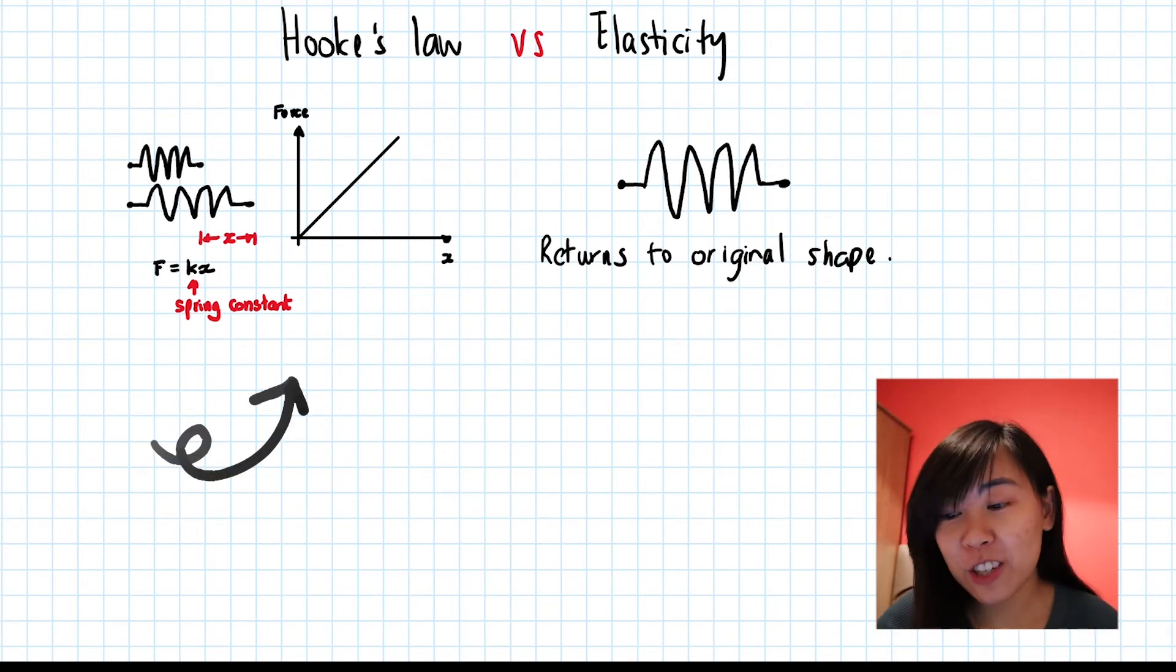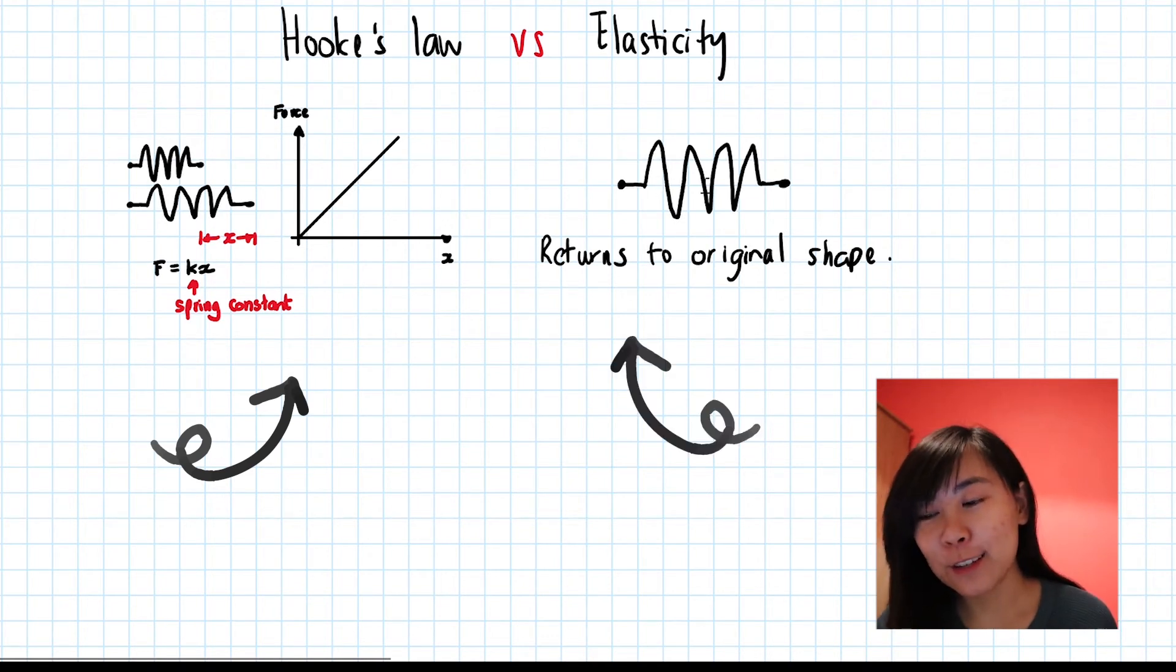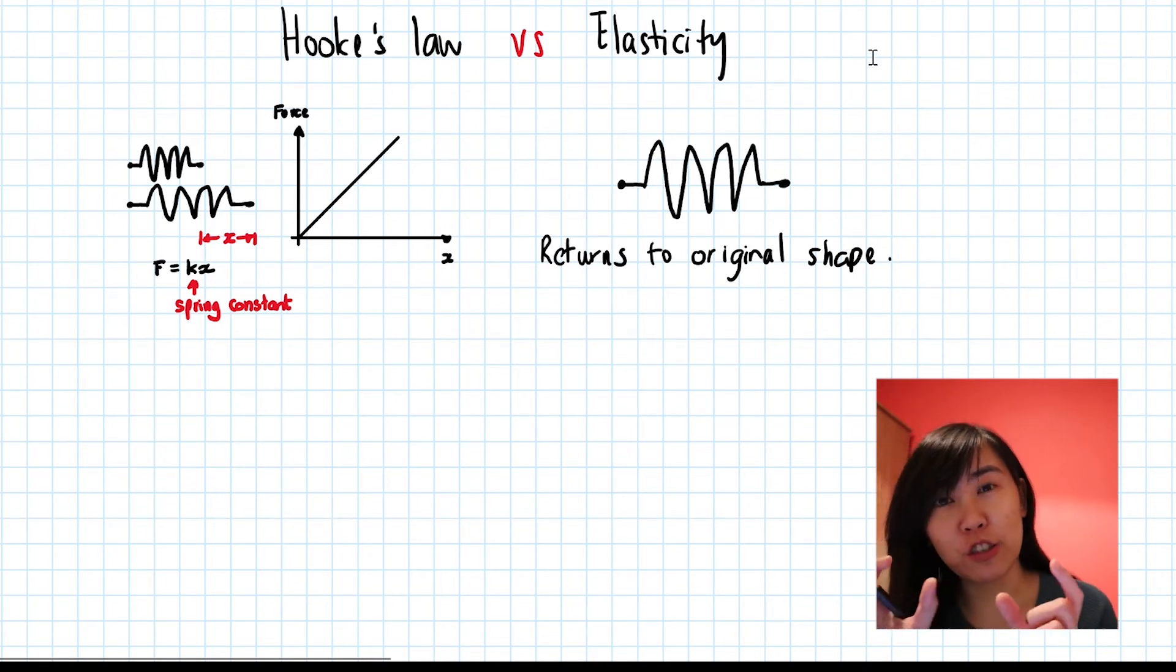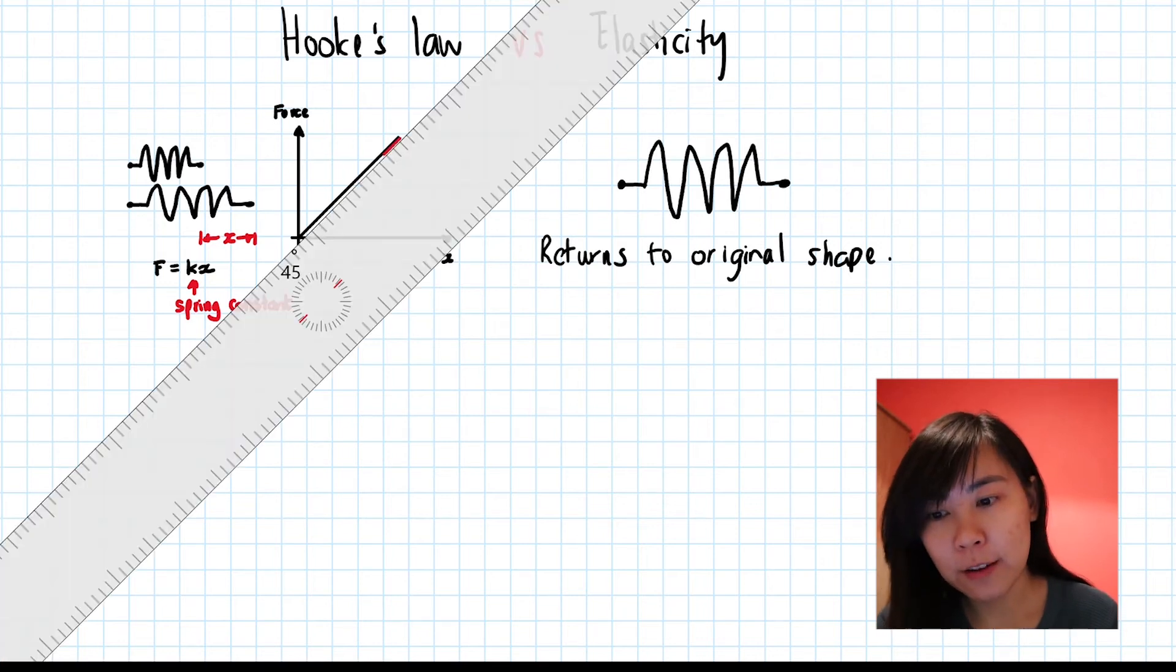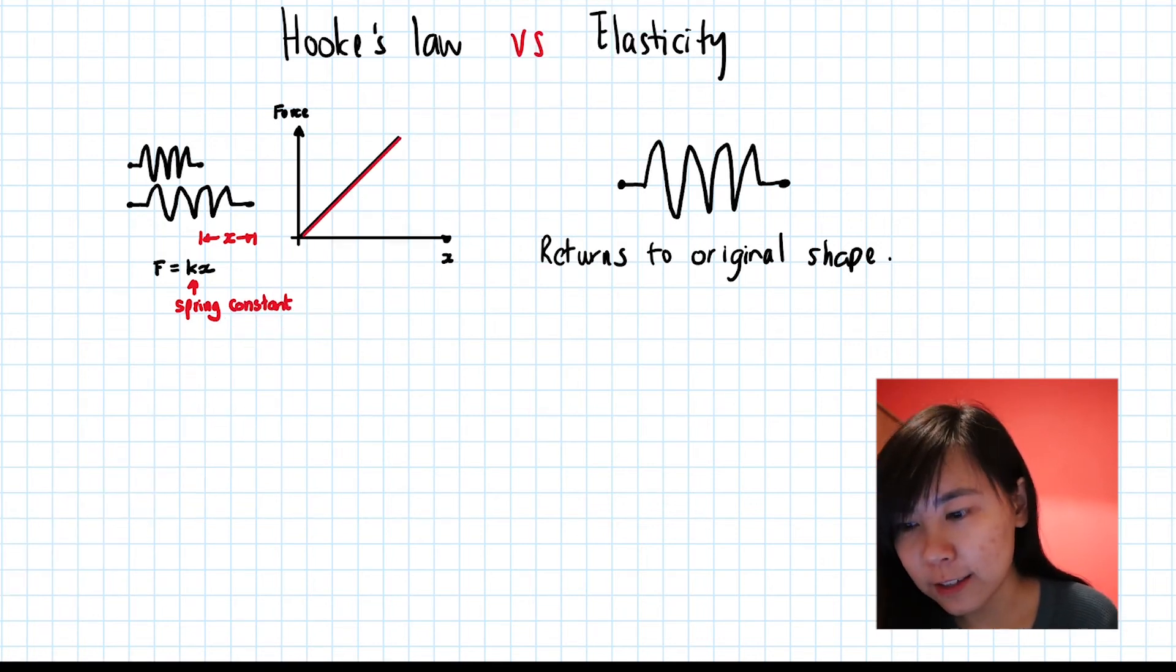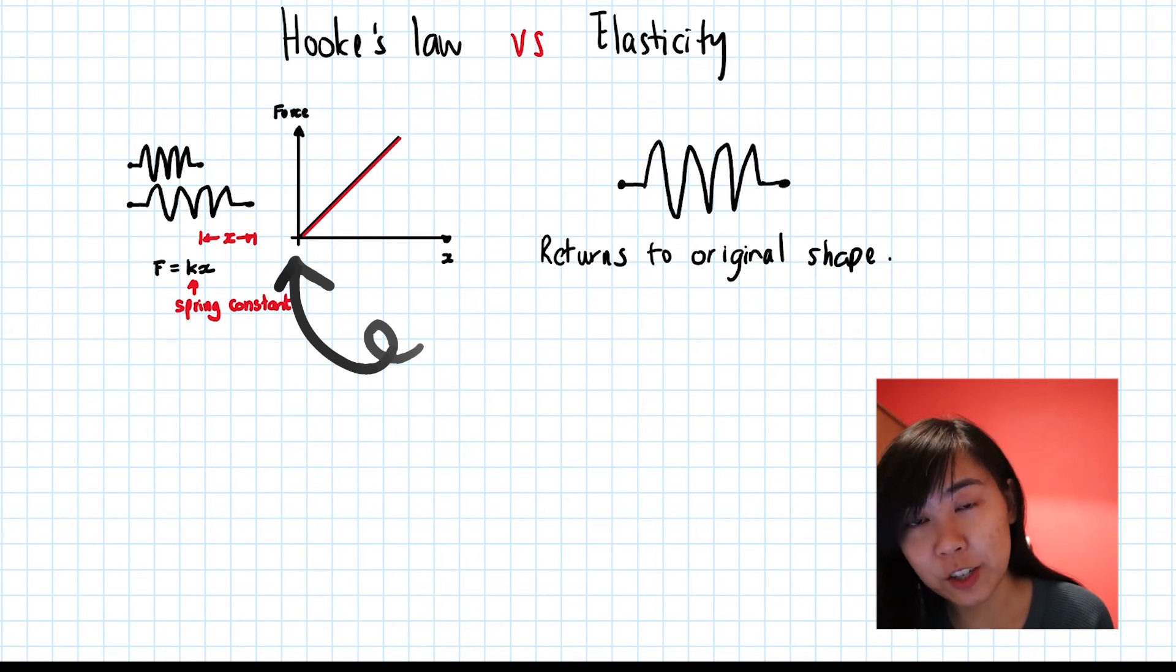Very often, if an object obeys Hooke's Law, it is also elastic. So that means that if I unstretch a spring, then if I plot the unloading graph, it should look something like this. It returns to its original position, and there is no permanent deformation.